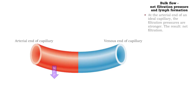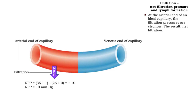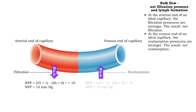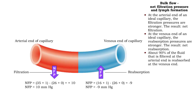At the arterial end of the capillary, filtration pressures are stronger by 10 mm of mercury. At the venous end, reabsorption pressures are stronger by 9 mm of mercury. As these typical pressures illustrate, about 90% of the fluid volume that is filtered out of the capillary is reabsorbed.